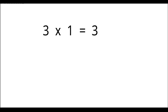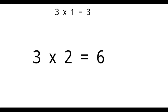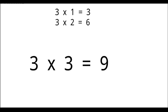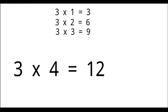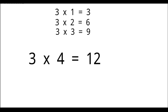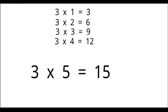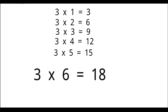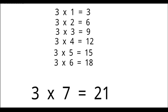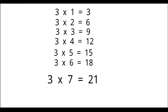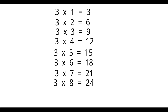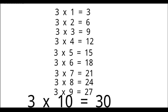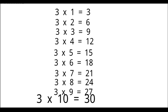3 times 1 is 3. 3 times 2 is 6. 3 times 3 is 9. 3 times 4 is 12. 3 times 5 is 15. 3 times 6 is 18. 3 times 7 is 21. 3 times 8 is 24. 3 times 9 is 27. 3 times 10 is 30.